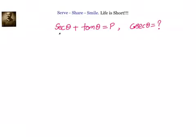We have been given that secant theta plus tan theta equals p, and we have to find out the value of cosecant theta. We can solve this problem in more than one way. Let us look at one of the ways. First, what is the identity related to secant theta and tan theta? We know that secant square theta minus tan square theta equals 1.